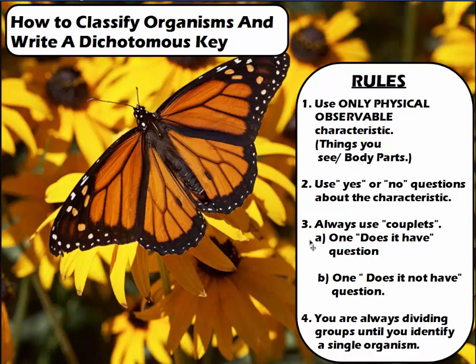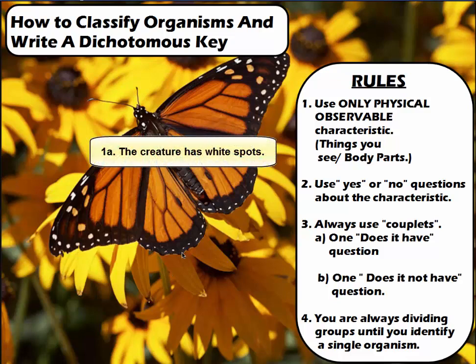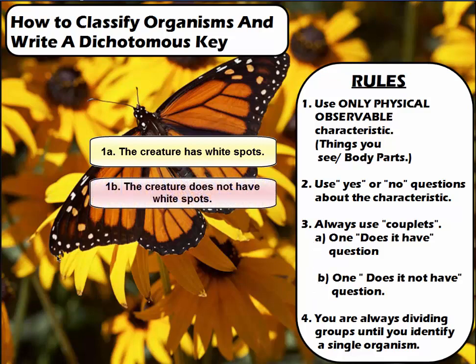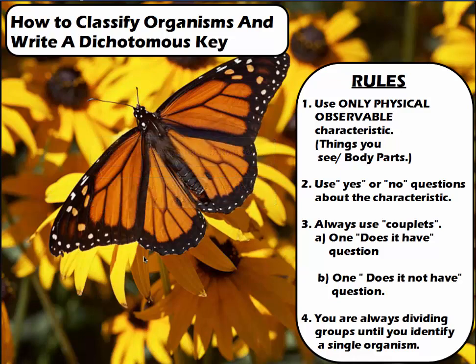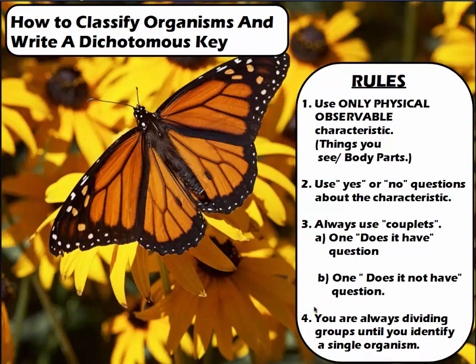Usually one statement in a couplet says the creature has a characteristic, and the second one says the creature does not have it. For example, in a couplet identifying butterflies, statement A could say the creature has white spots, and statement B would say the creature does not have white spots — the opposite of the first statement. We continue doing this until we identify each individual organism.